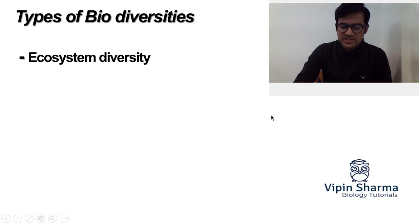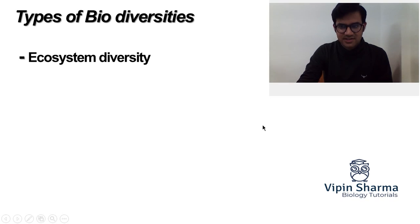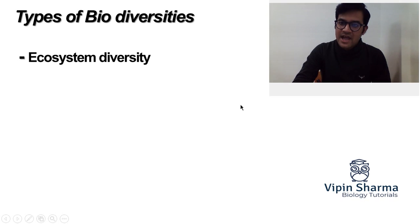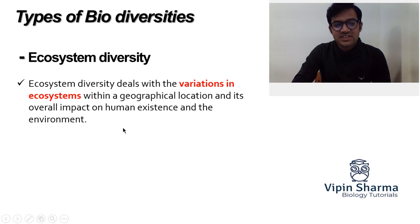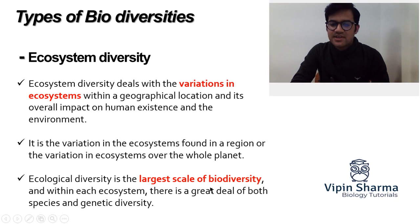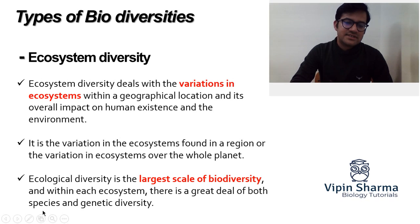The bigger picture comes under ecosystem diversity. Deserts, the Arctic, tropical rainforests, temperate rainforests, and grasslands all have different climatic conditions, each having their own flora, fauna, and environmental conditions, making up different ecosystems. The diversity in these ecosystems comes under ecosystem diversity — the variation of ecosystems found in a region, or the variety of ecosystems over the whole planet. This is the largest scale of biodiversity, encompassing species and genetic diversity within it.